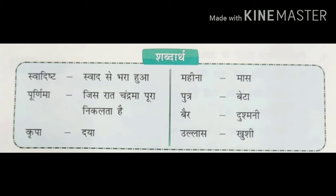Next word is Mahina. Mahina का मतलब है मास (month). पुत्र — बेटा (son). बैर — दुश्मनी (enmity). और उल्लास — उल्लास का अर्थ है खुशी (joy/enthusiasm).